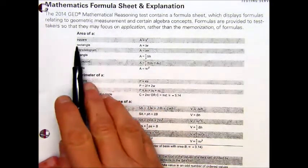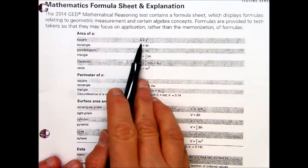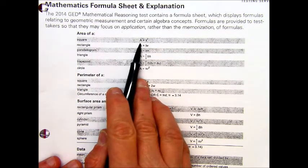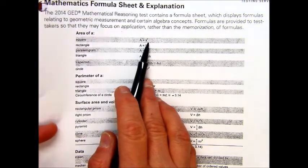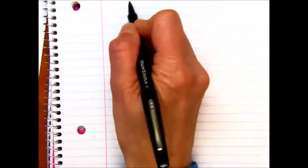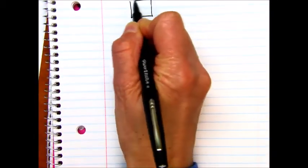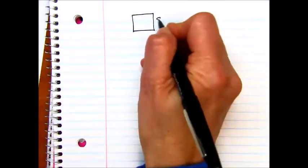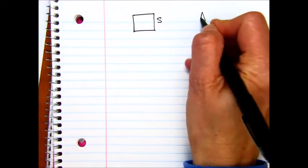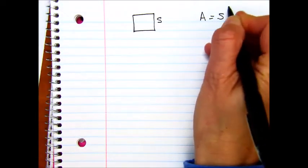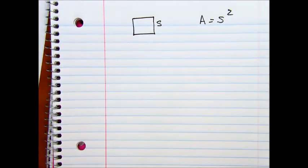You can see right here in this first one, the area of a square is A equals S squared, and that S is going to be side, side squared. So I'm going to go ahead and draw a picture of a square. A square, as you know, all sides are the same. Here's my side, S represents the side, so area equals side squared.